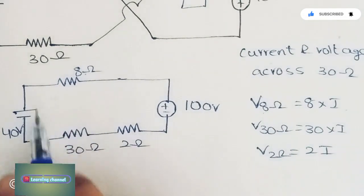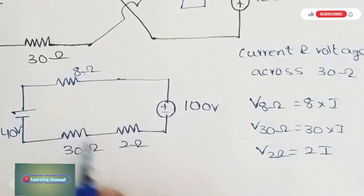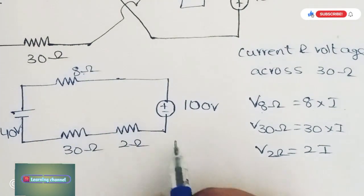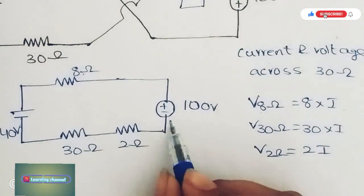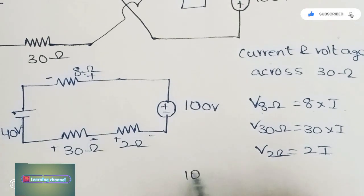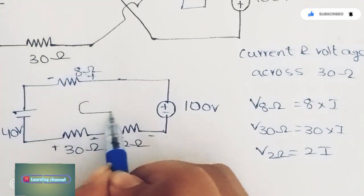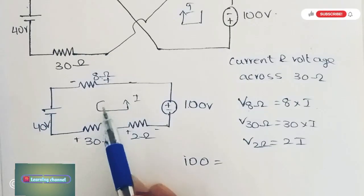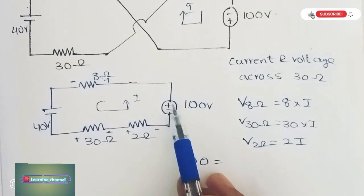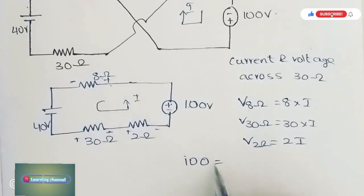According to KVL, all voltages equal zero, or the sum equals the battery voltage. By following the sign, we can write 100 = 8I + 30I + 2I. If you consider the current direction, current I flows from minus to plus, and all other currents flow from plus to minus.